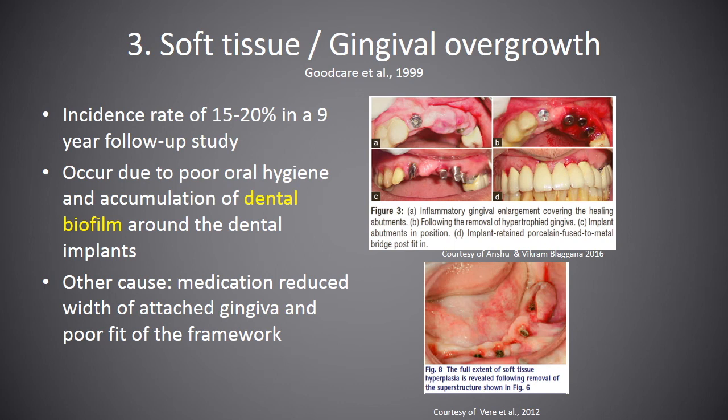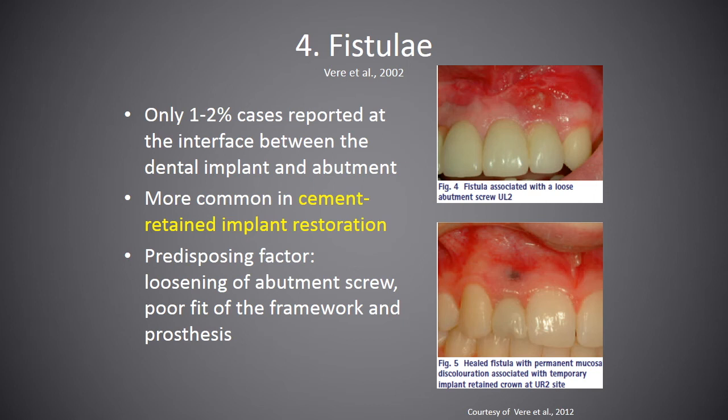Treatment of soft tissue overgrowth includes removal of the underlying cause and oral prophylaxis. The next biological complication is fistulae. Only 1–2% of cases have been reported at the interface between the dental implant and the abutment. Fistulae are more common in cement-retained implant restorations. Predisposing factors include loosening of the abutment screw and poor fit of the framework and prostheses. Fistulae should be treated with 0.2% chlorhexidine solution, and an adequate amount of torque should be applied while placing the prostheses.